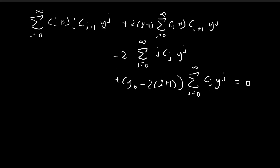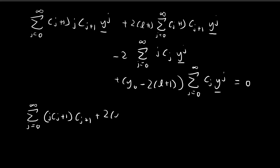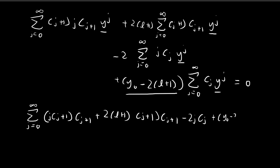Since every term is multiplied by y^j, we can combine everything into a single summation. Collecting the coefficients, we have: j(j+1)·c_{j+1} plus 2(l+1)(j+1)·c_{j+1} minus 2j·c_j plus (y_0 minus 2(l+1))·c_j, all multiplied by y^j, and this entire sum equals zero.